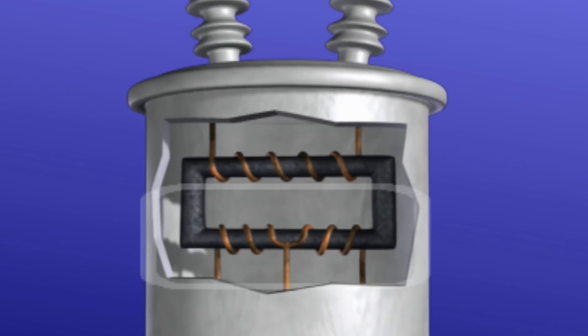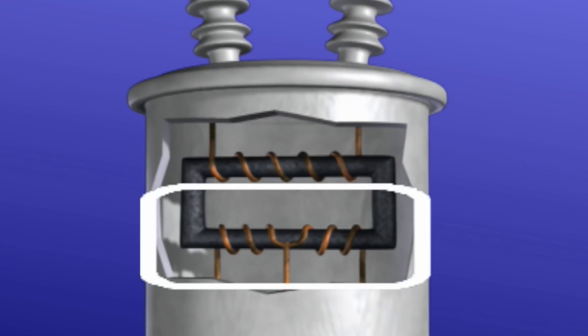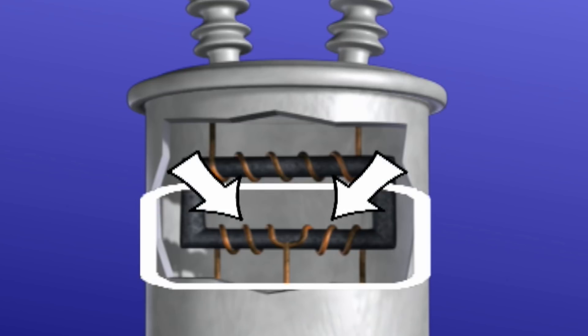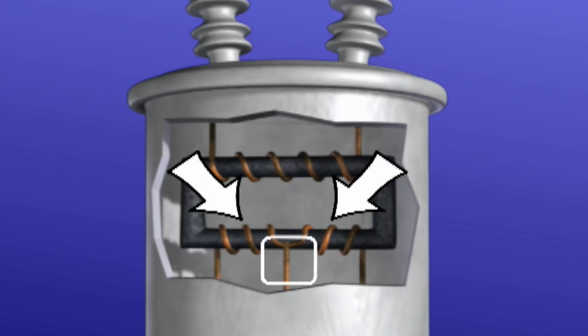Now, even though it functions as a single unit, the secondary winding in a single-phase transformer is actually made up of two individual coils of equal size that are electrically connected together. How the two coils are connected can vary depending on how the transformer is used. We'll look at these various connections in more detail later on.